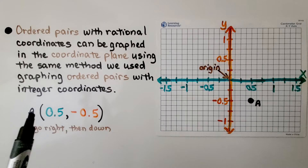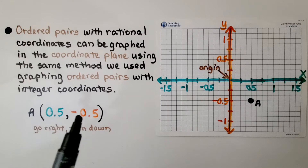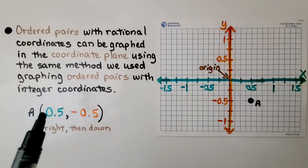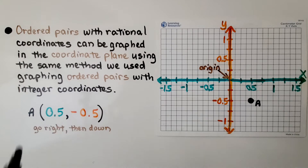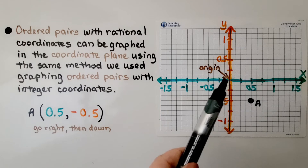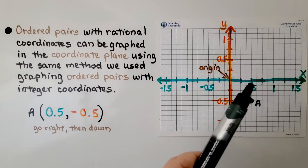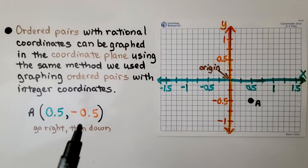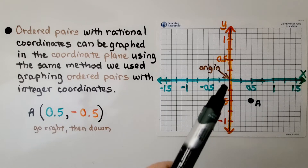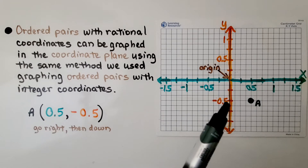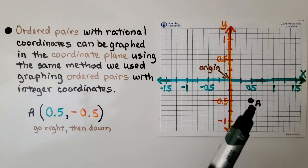It's no different than graphing five and negative five — except now we have five-tenths and negative five-tenths. Our x value is five-tenths, so we go right of the origin to the midpoint between zero and one. Then we go down on y because it's negative five-tenths, and that's where the two meet — that's point A.